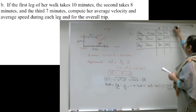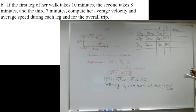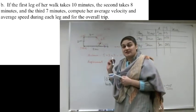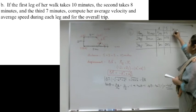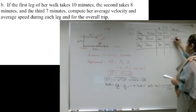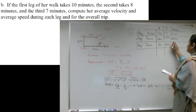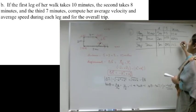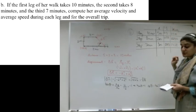Now what about velocity? The velocity values will be exactly the same as the speed values, except now they have a direction associated with them. So the velocity is 0.5 miles per minute directed west, 0.25 miles per minute directed north, and 0.43 miles per minute directed east.